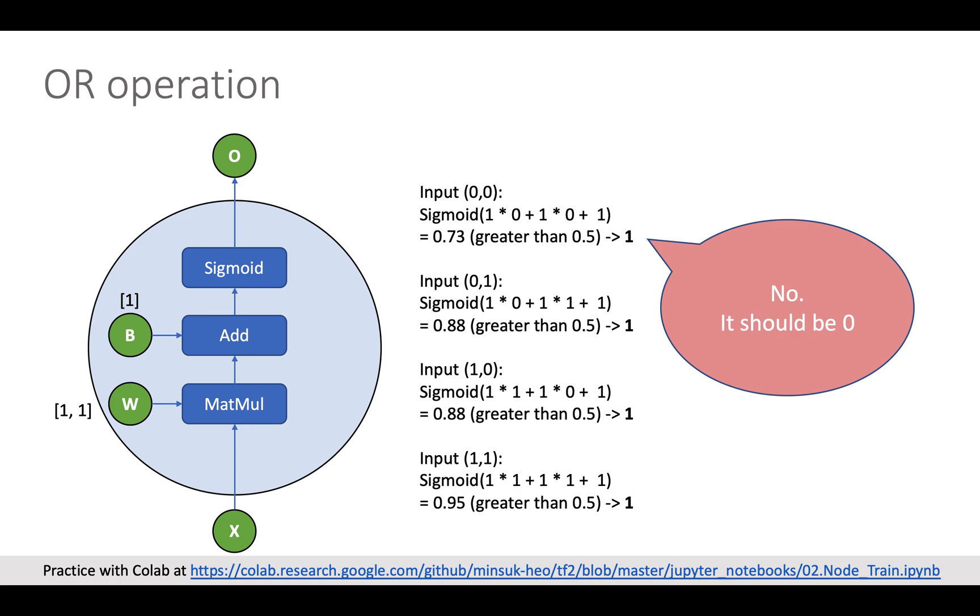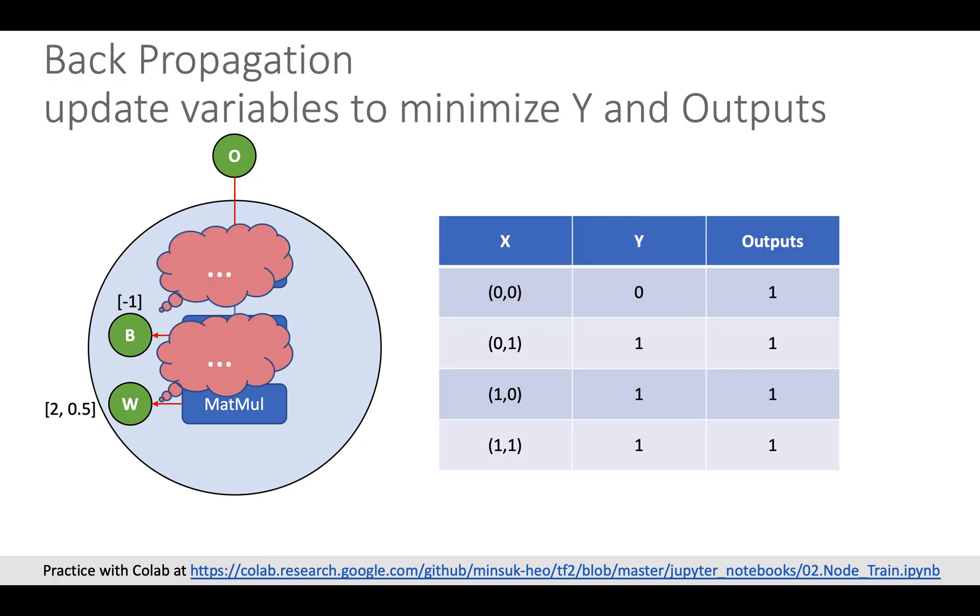Node supposed to say 0 for the input 0, 0, but it said 1. So the node need to do the back propagation.